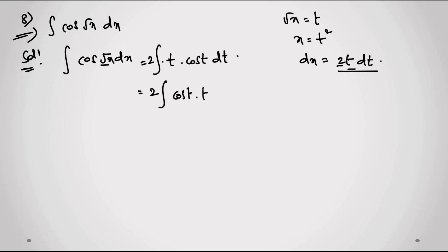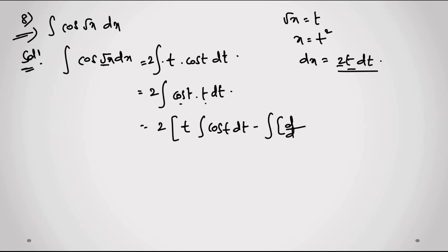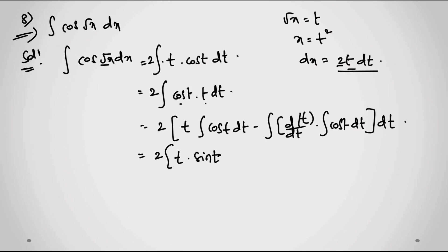We have to expand this using integration by parts. I take t as u. It becomes 2 into: t·integral of cos(t) dt minus integral of [d/dt of t · integral of cos(t) dt] dt. This gives 2 into t·sin(t) minus integral of 1·sin(t) dt.